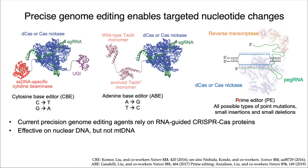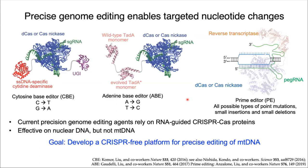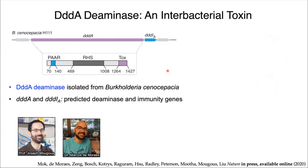While these CRISPR systems have been very effective on nuclear DNA, to our knowledge they have thus far not been applied successfully to edit the mitochondrial DNA, in part due to the challenges of delivering the guide RNA into the mitochondria. So our goal was to develop a CRISPR-free platform that would enable precise editing of mitochondrial DNA, and to develop such a system we would require new proteins with novel enzymatic functions.